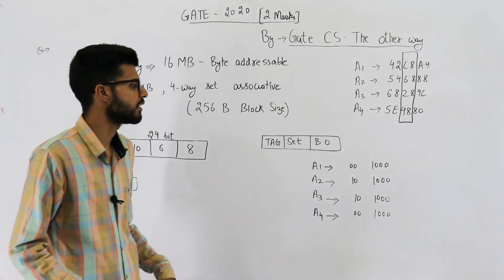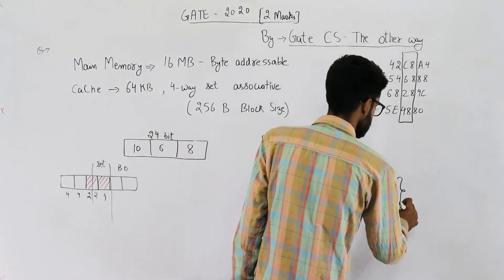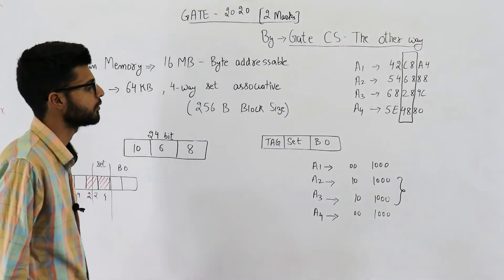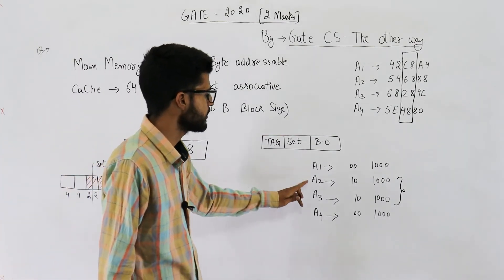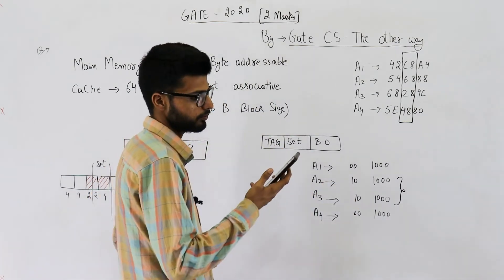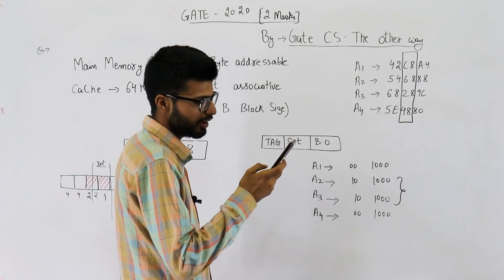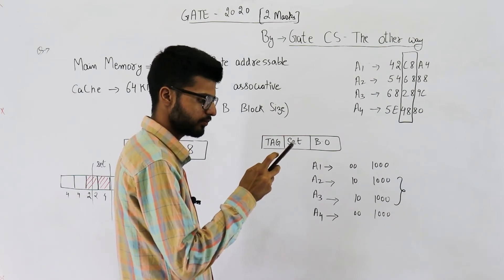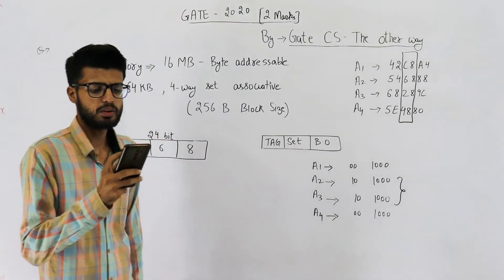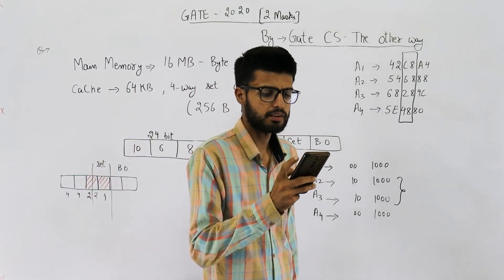It is now evident that address 2 and address 3 fall on the same set in the cache. So the answer is: address 2 and address 3 have the same set number. Checking the options — option B states A2 and A3 are mapped to the same cache set. So option B is correct.